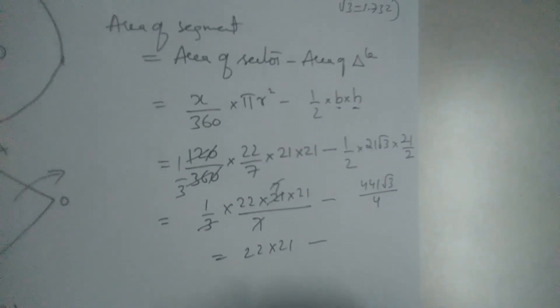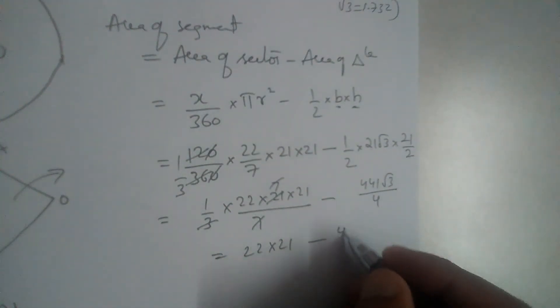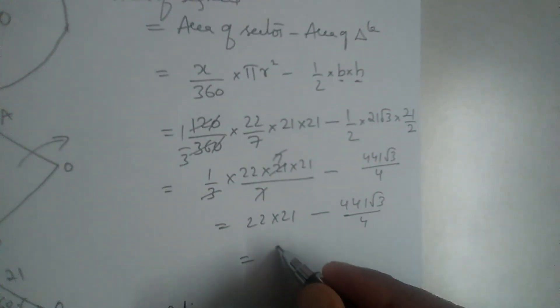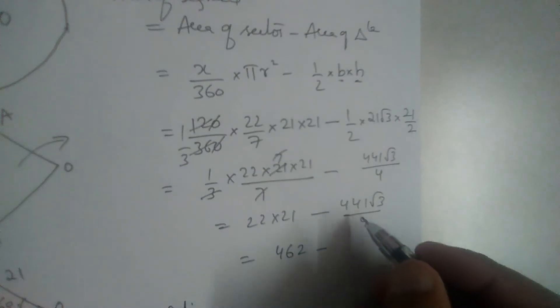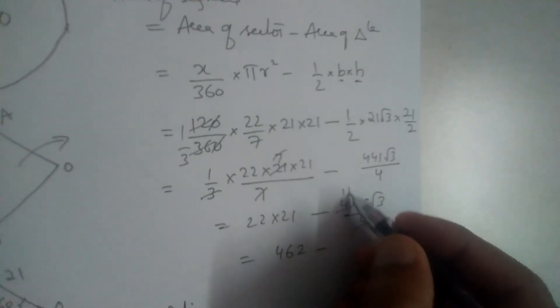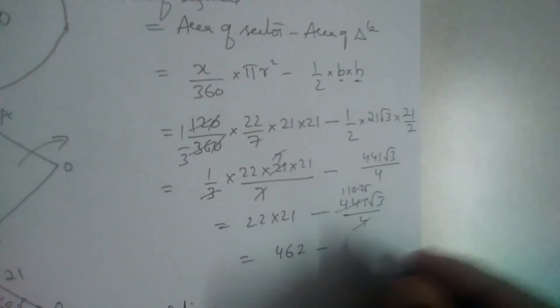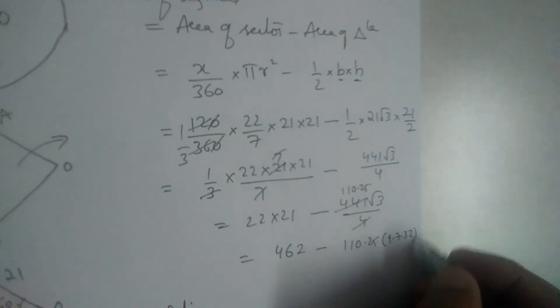So we will have like this, so 441 root 3 divided by 4. We should simplify this, 22 into 21 will give us 462 minus this is 110.25 multiplied by 1.732.